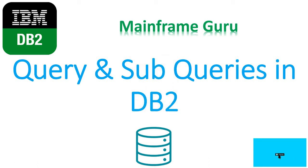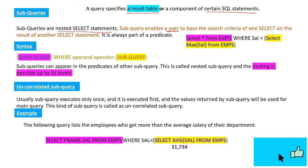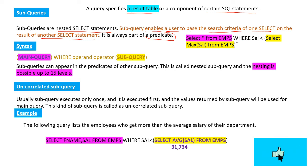Today's topic is query and subquery in DB2. A query represents a result table or is a component of certain SQL statements. Subqueries are nested SELECT statements that enable a user to base the search criteria of one SELECT on the result of another SELECT statement. A subquery is always part of a predicate, which is a conditional expression written with the WHERE clause. In the purple color is the main query, and in the yellow color is the subquery.